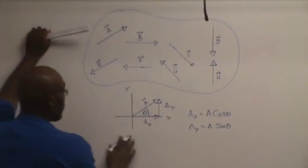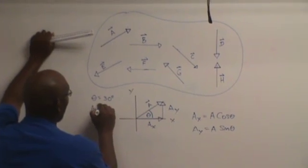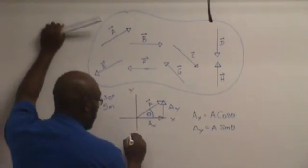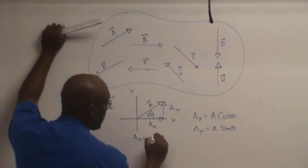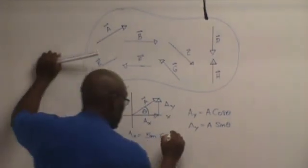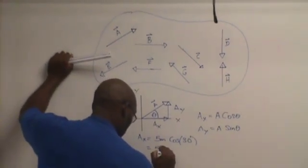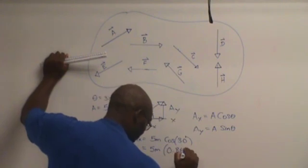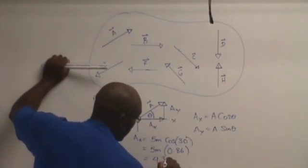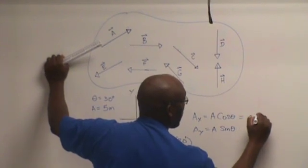Let's say, for example, theta is 30 degrees and A is 5 meters. For the X component, we will find that A subscript X is equal to 5 meters times the cosine of 30 degrees. The cosine of 30 degrees is 0.86, which gives us a value of 4.3 meters for the X component.